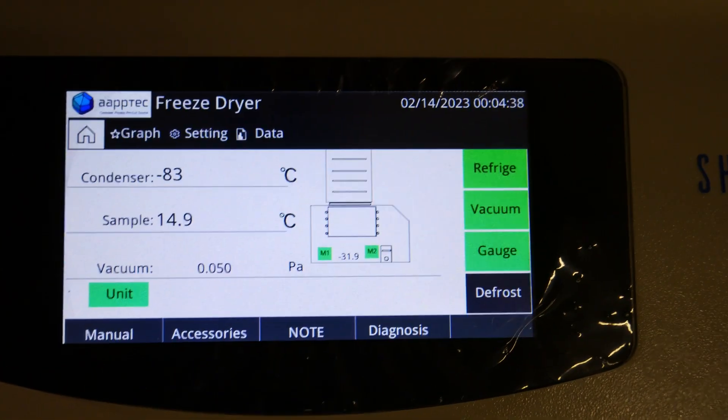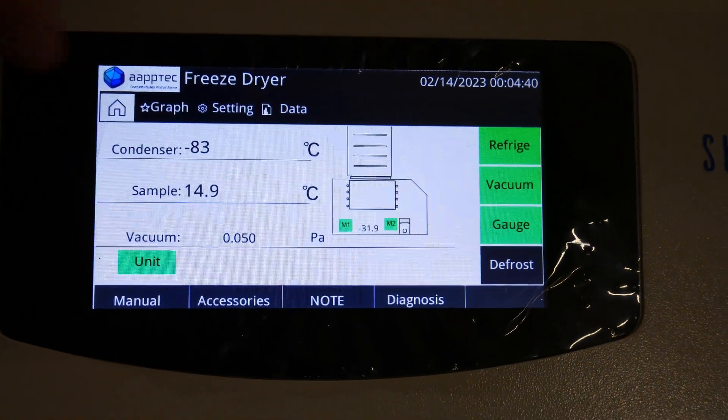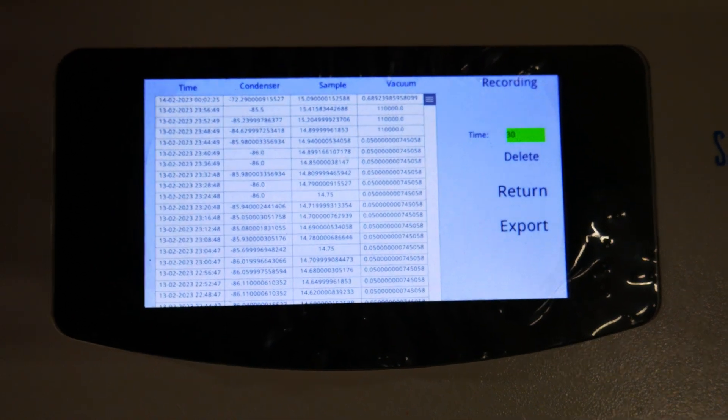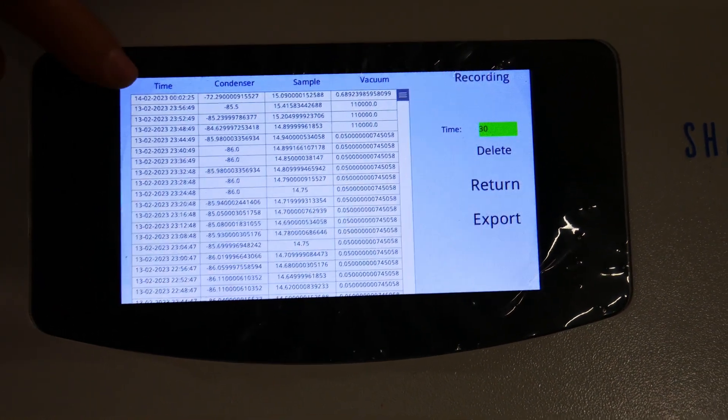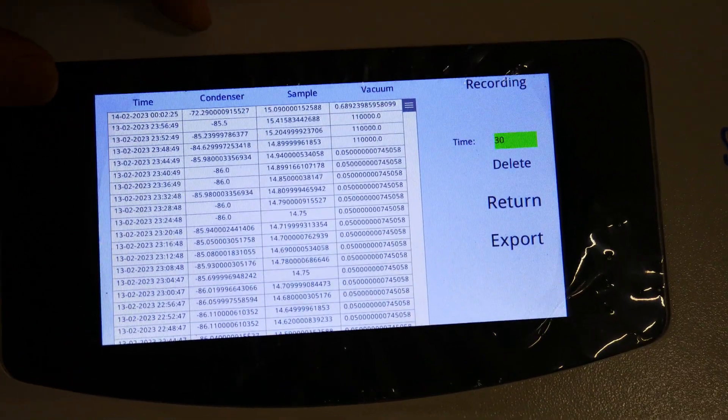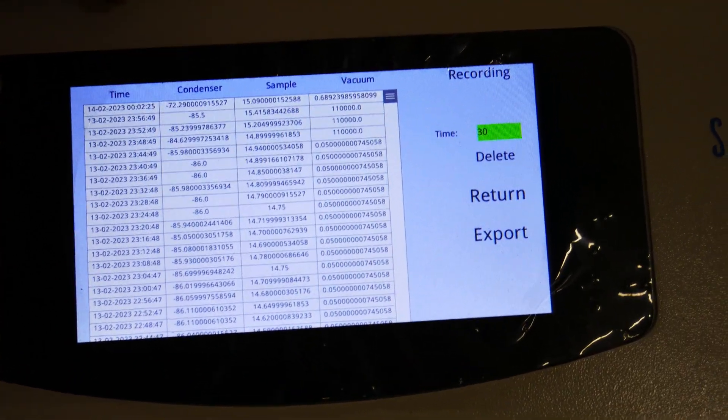Now, we come to the data. By pressing data, it shows you how the system has been working. It shows you the vacuum, the time, the temperature of the compressor, the temperature of the sample, and how the vacuum worked. So you have data to show you when and how the system changed over time.